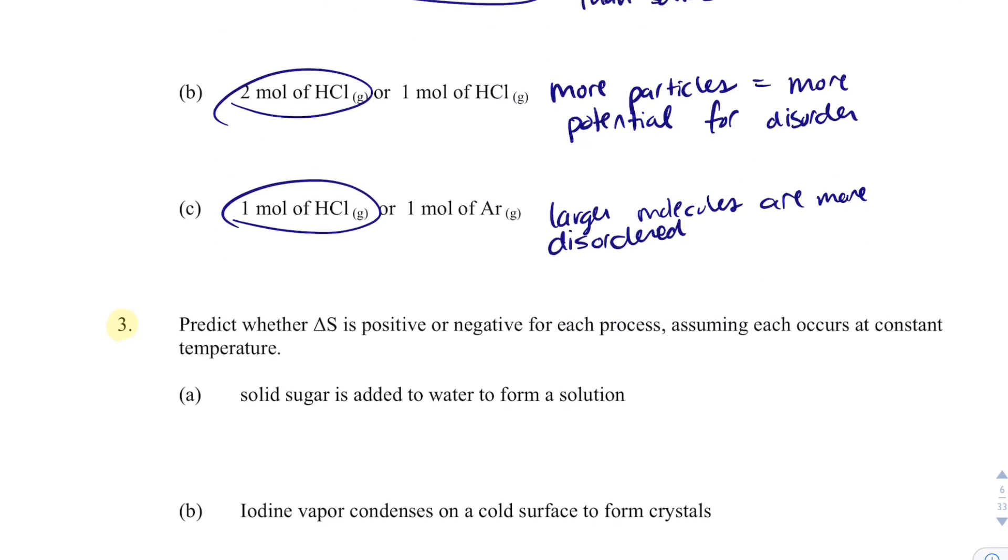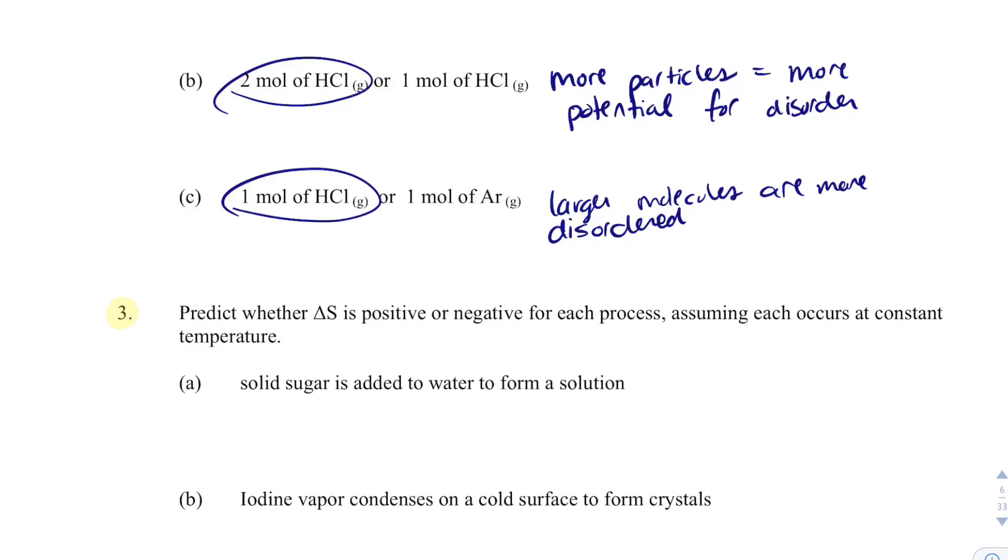Last question: I've got to predict again with this process. If I take solid sugar and dissolve it in water to form a solution - that means aqueous - if I'm going from solid to aqueous, delta S is going to be positive because I'm becoming more disordered. If I condense something, vapor means gas, and if I condense it it's going to the liquid phase. Gases are much more disordered and liquids are less disordered, so because I'm losing disorder, delta S will be negative.